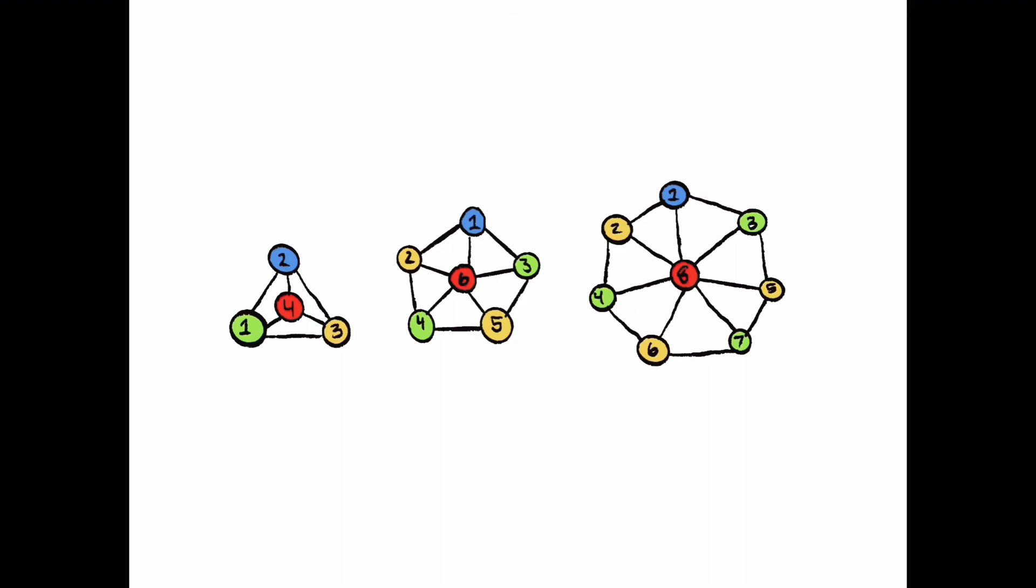Whenever we form a hub connected to all vertices in a ring of odd size, four colors are required. If the hub doesn't connect to all of the vertices, since only one vertex needed to be a third color in a ring of odd size, we can make the vertex not connected to the hub and the hub the same color, and thus once again we will only need three colors.